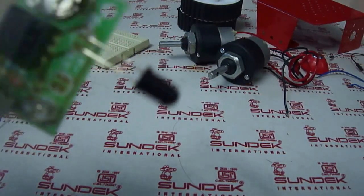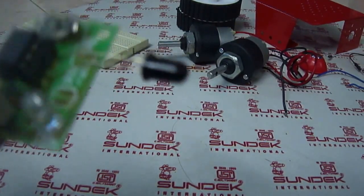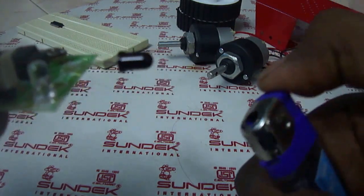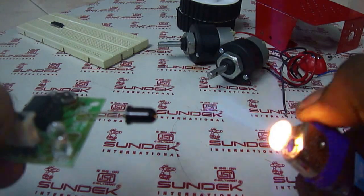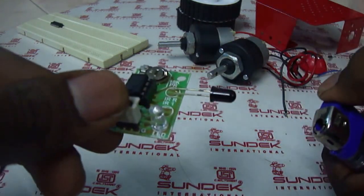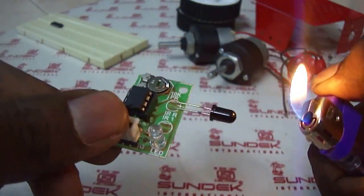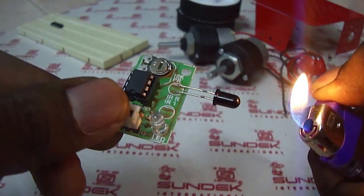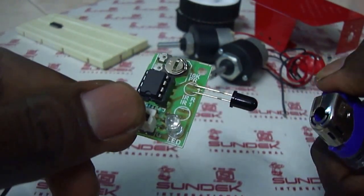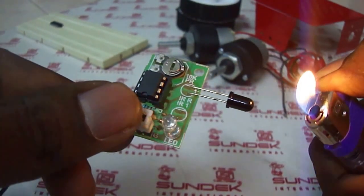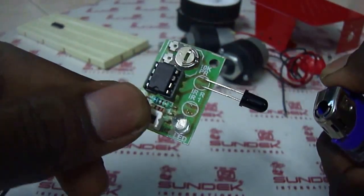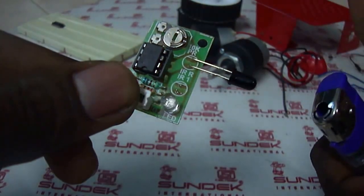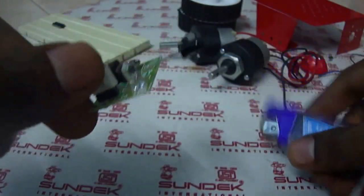Let's see how this flame detector sensor works. I am lighting a lighter. See here, you can see it gives an output. Whenever it detects a flame it gives 5V output. See here, you can see, so this is how this sensor works.